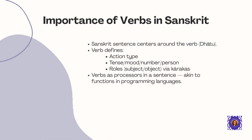In Sanskrit, the verb holds central importance in sentence structure. Unlike some languages where nouns might take prominence, Sanskrit sentences revolve around the verb, which defines the action type, tense, mood, number, person, and the roles played by other elements in the sentence through the Karaka system. We can think of verbs as processors in a sentence, similar to functions in programming languages. They take inputs — subjects, objects, etc. — process them according to defined parameters, and produce meaningful outputs. This verb-centered approach creates a systematic, logical framework for understanding how sentences convey meaning.